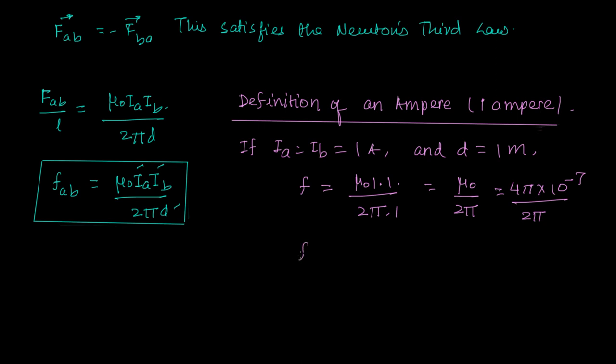So in effect, my F becomes equal to 2 into 10 to the power minus 7 Newton per meter.